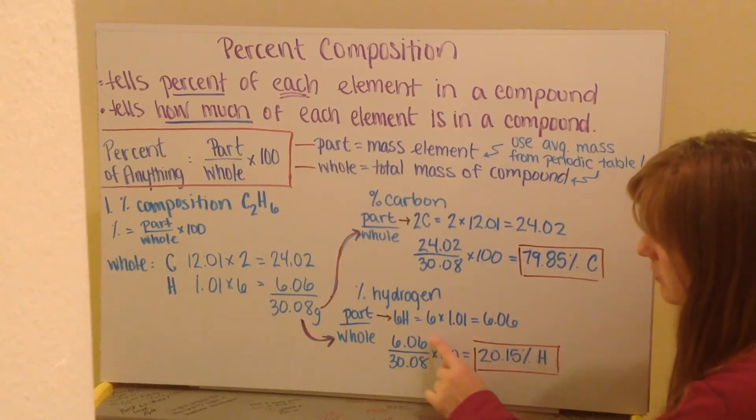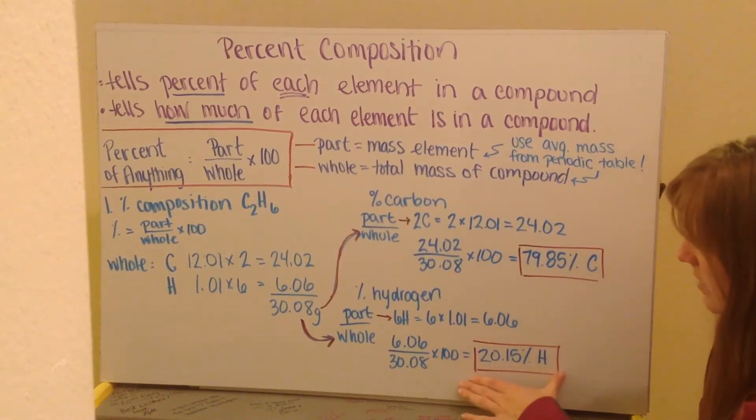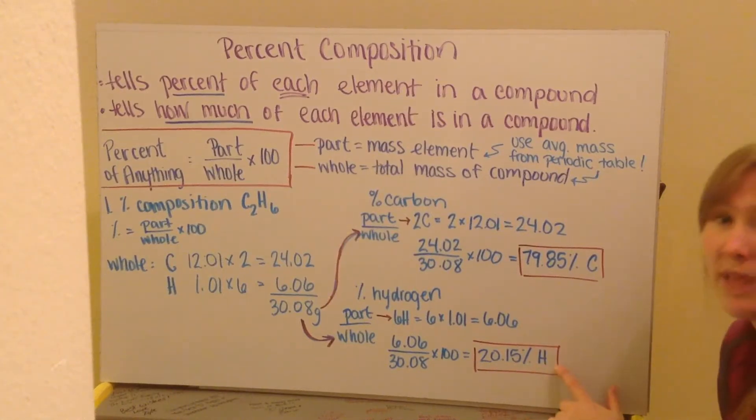So 6.06 divided by my whole of 30.08, times 100, gives me a percent composition of hydrogen of 20.15% hydrogen. Please make sure that you label what element you're finding the percent for.